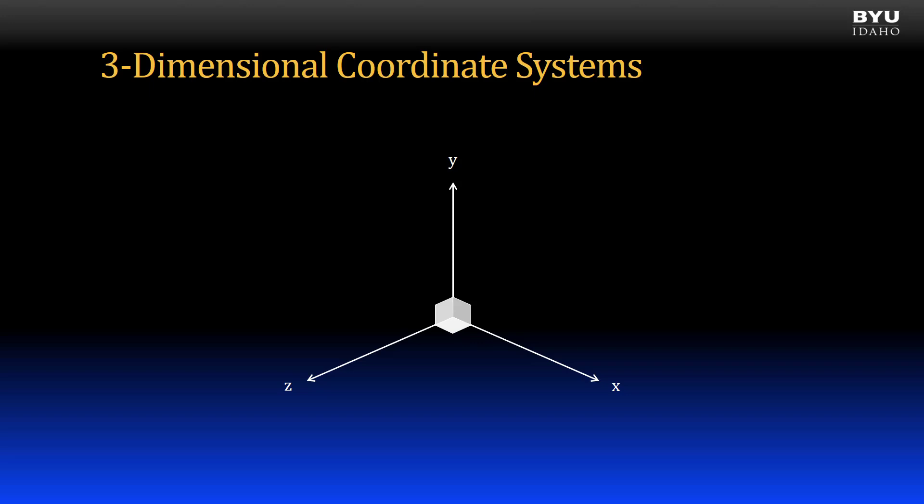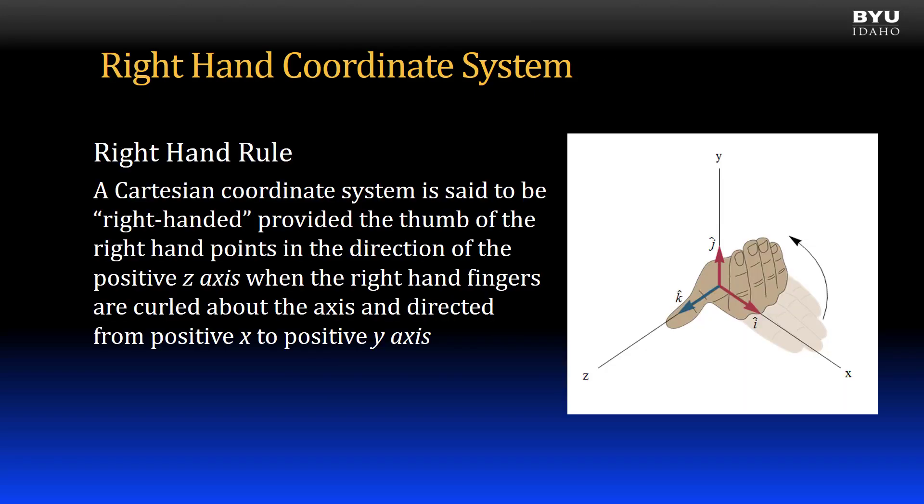We use a rectangular or Cartesian XYZ coordinate system, where each axis is orthogonal, or perpendicular to the other axes. In engineering and in working with CAD systems, we conventionally define an XYZ coordinate system using the right-hand rule.